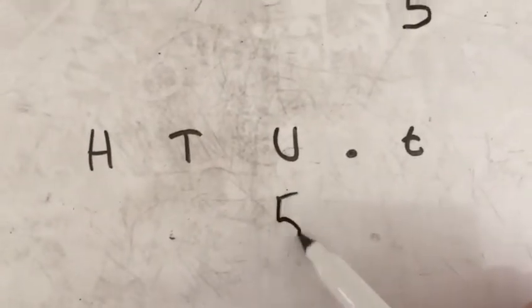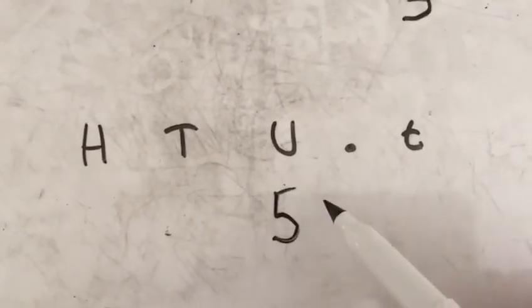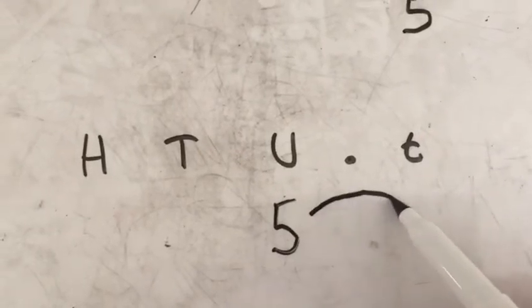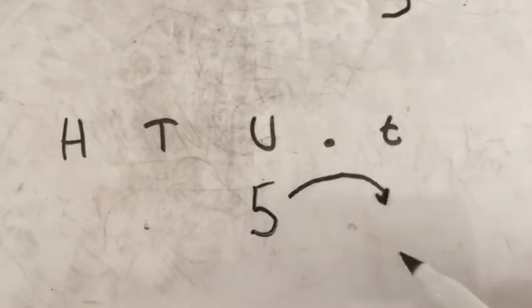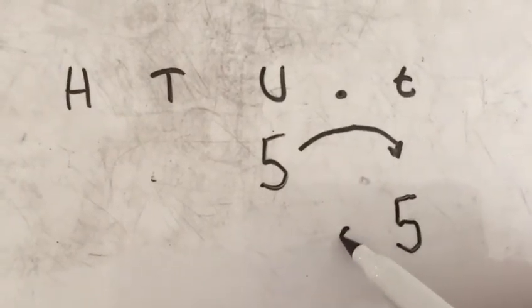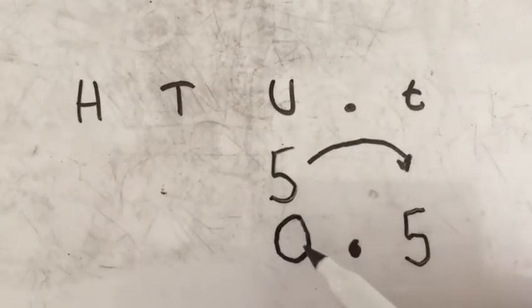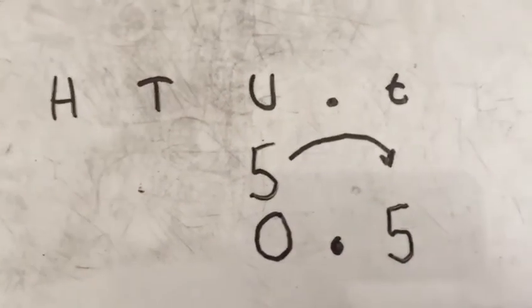Now same again with decimals. If we started with our 5 in our units column, if we divided by 10, what would happen is it would jump over where the decimal point is into our tenths column. Now the only difference with this is, we need to make sure our decimal point is put in, and our placeholder this time will go into our units column to show that it would be 0.5.